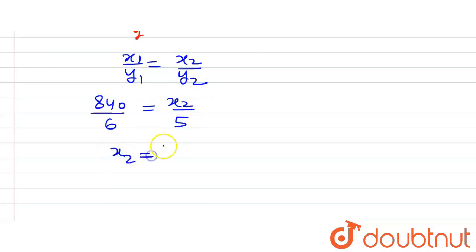So solving it, we will get x2 is equal to 140 multiplied by 5 which will be equal to x2 is equal to 700.